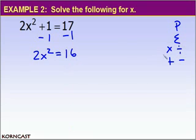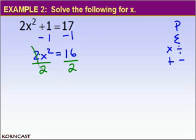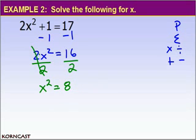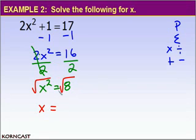Next, we take care of multiplication and division. We divide both sides by 2. Two divided by 2 cancels to 1, so we're left with x squared equals 8. Now to take care of the exponent, we take the square root of both sides. The square root of x squared is x, giving us x equals the square root of 8. Because we used the square root to solve, don't forget the plus or minus: x equals plus or minus square root of 8.